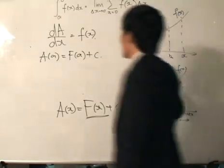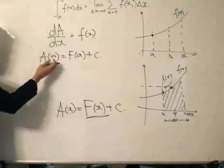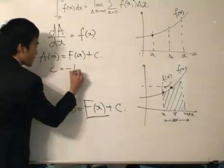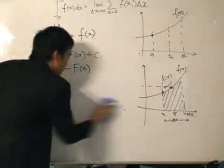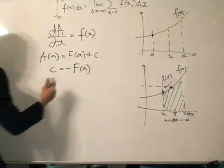But certainly there's no area, because that's the starting point. So this is going to 0, and c equals minus big function F(a). And then substituting inside here, we got...